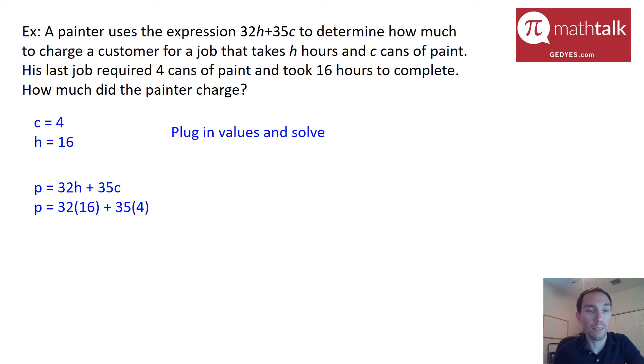Then I'm going to use my calculator to solve for the numbers. So 32 times 16 is 512 and 35 times 4 is 140. I'm going to add those two together and I get P or the price is $652 which means this painter is going to charge $652.